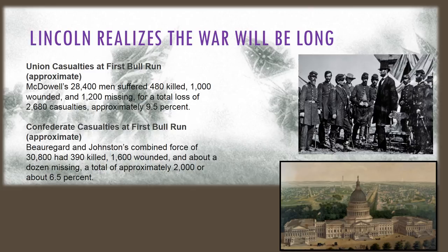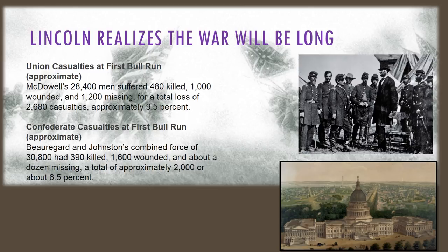Most people in the North had believed the war would be super short and expected that a Union victory would crush the rebels and send them into submission, restoring the country and putting the South in its place once again. However, the First Battle of Bull Run changed all of that. Just look at the numbers: 480 Union soldiers died, 1,000 were wounded, and 1,200 were missing — a total loss of 2,680 Union casualties, approximately 9.5% of the 28,400 men who fought for the North. Compare that to the South: 390 Confederate soldiers were killed, 1,600 were wounded, and only about a dozen were missing — a total of approximately 2,000 men, or about 6.5% of the 30,800 men fighting for the Confederate side. The Union lost. The North is shocked, and Lincoln realizes that the war will be a lot longer than everyone first thought.